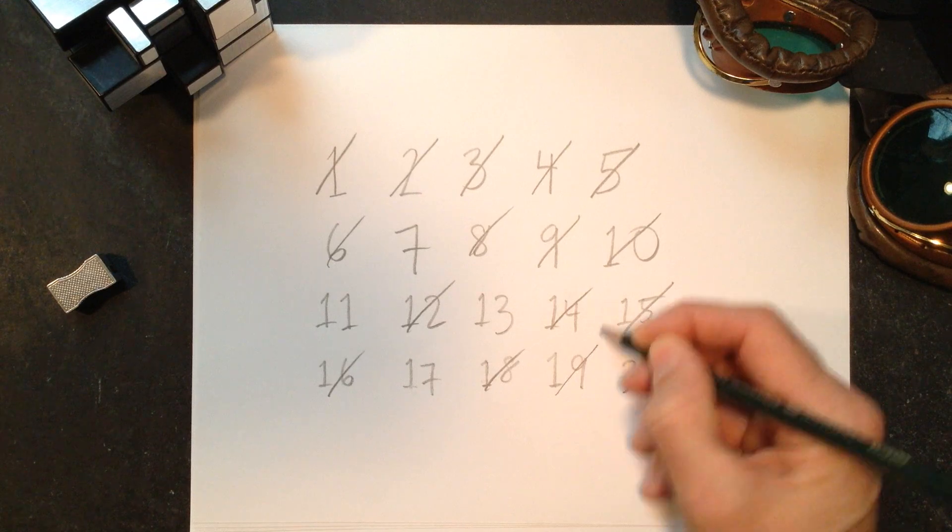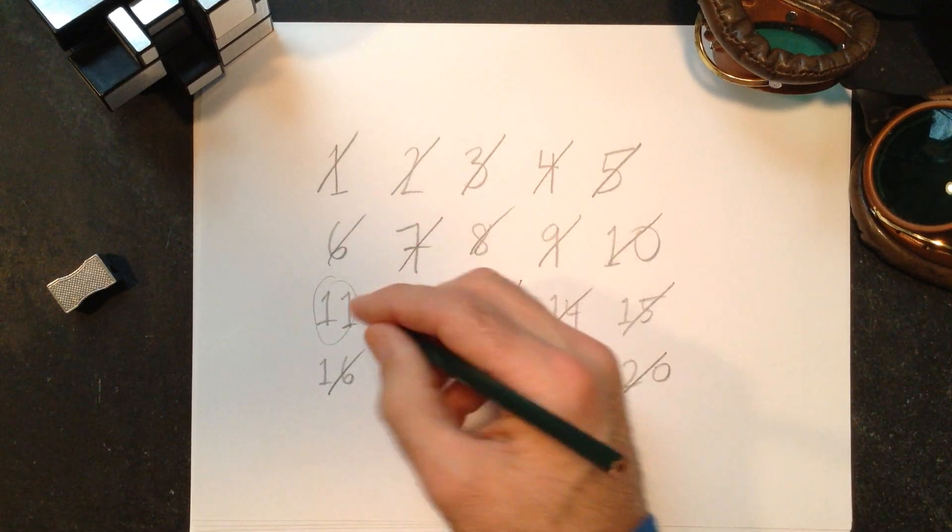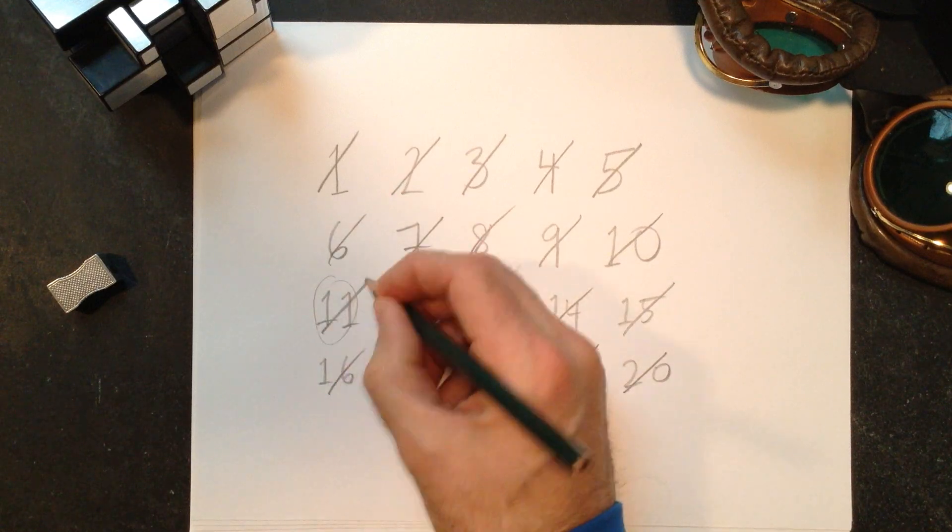19 is too close to 20. 13 and 7 are lucky numbers. 11, interesting, but has 2 1s, so that just doesn't look very good.